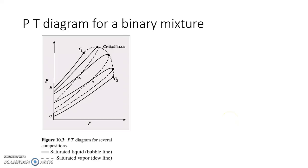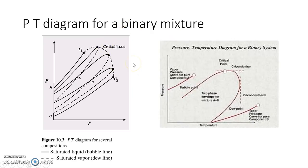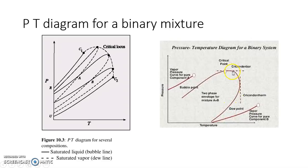Let's see today how a PT diagram for a binary system behaves near a critical region. A PT diagram, as we discussed last time, when we enlarge one such nose, can be seen like this. This is a pure component vapor pressure curve for the first component, and this is the pure component vapor pressure for the second component. This is the bubble point curve, the saturated liquid line, and the saturated vapor line.